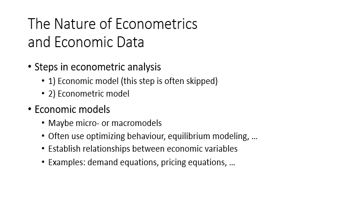How do we construct econometric analysis? Usually there are two steps. First, we construct an economic model guided by theory. Second, we transfer this economic model to an econometric model. Economic models can be macroeconomic or microeconomic. We typically use optimizing behavior — such as maximizing profit or minimizing loss — or equilibrium modeling, like finding equilibrium price and quantity in a market model.